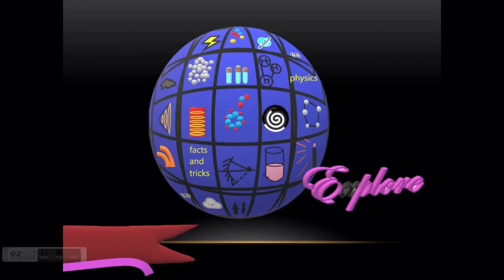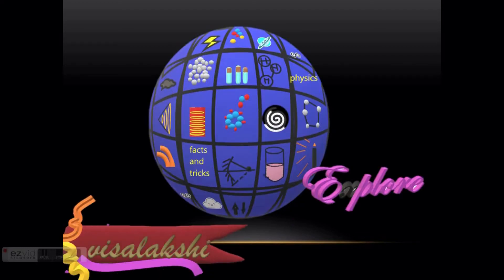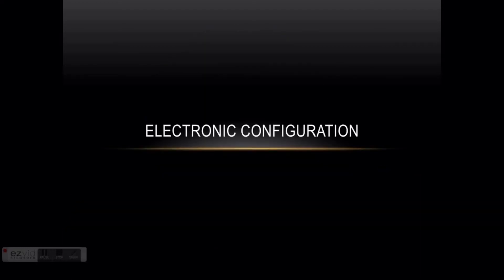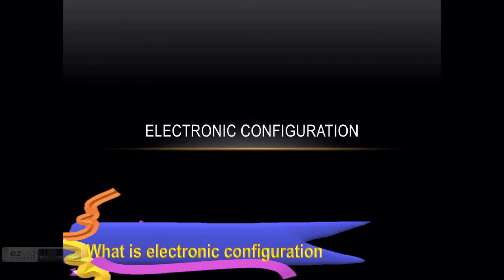Hello guys, welcome to Explore and this is Vissalakshi. In this video we are going to talk about electronic configuration. If you watch this video from beginning to end, you can do electronic configuration for any atom very perfectly. Electronic configuration represents the arrangement of electrons around the nucleus.